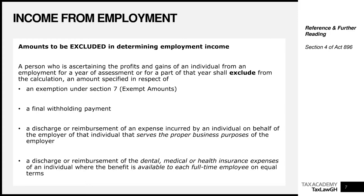The next exclusion is a discharge or reimbursement of an expense incurred by an individual on behalf of the employer, where it serves a proper business purpose of the employer. For example, if you go out and buy things for the company's use and the company reimburses you, the law is saying it is not income you earned — you already incurred the expense, it was related to a proper business purpose, and the employer is simply giving your money back. Therefore it is not to be included in your employment income.